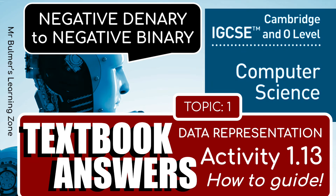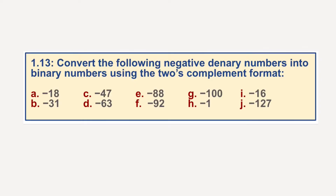Welcome back to 1.13. This is probably the hardest bit of all of binary, hexadecimal, and number conversions. We're going to be working with negative binary numbers, and we're going to convert these into binary numbers using two's complement.